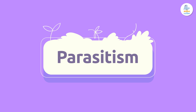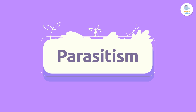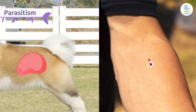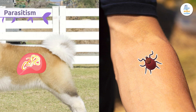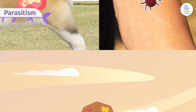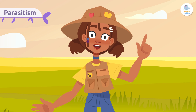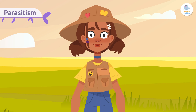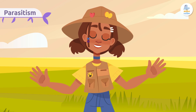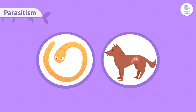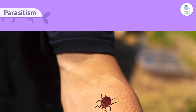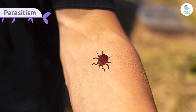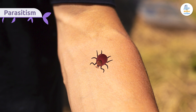Parasitism. In this case, an organism known as a parasite lives in or on another organism called a host. The host doesn't die, but it does suffer from some type of damage from the parasite. In other words, one living being benefits and the other is harmed. An example of parasitism would be a tick parasite infecting a human.